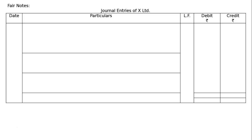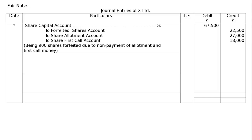Journal entries of X Limited. Share capital account debited: 900 into 75 = Rs. 67,500, being the amount called (application Rs. 25, allotment Rs. 30, first call Rs. 20). To forfeited shares account: 900 into 25 = Rs. 22,500, being only application money received. To share allotment account (amount not received): 900 into 30 = Rs. 27,000. Being 900 shares forfeited due to non-payment of allotment and first call money.